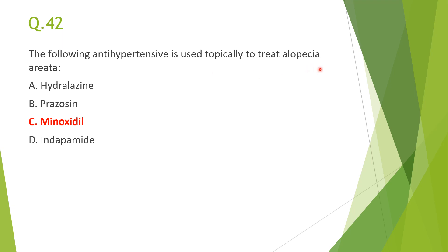Next: the antihypertensive drug used topically to treat alopecia areata is C, minoxidil. Minoxidil increases microcirculation in hair follicles and is also useful in male pattern baldness, apart from its antihypertensive effect.